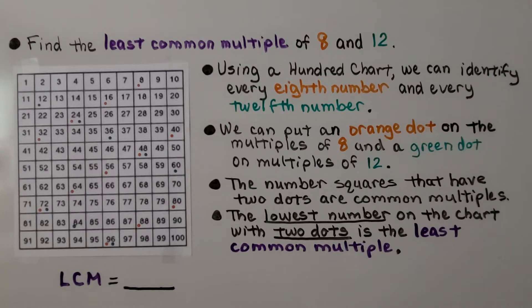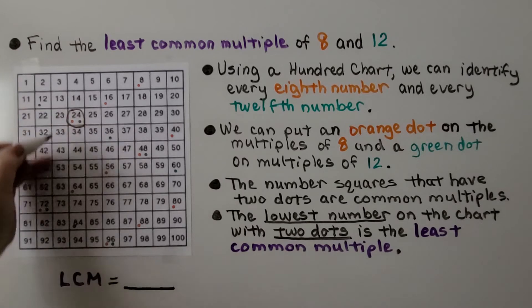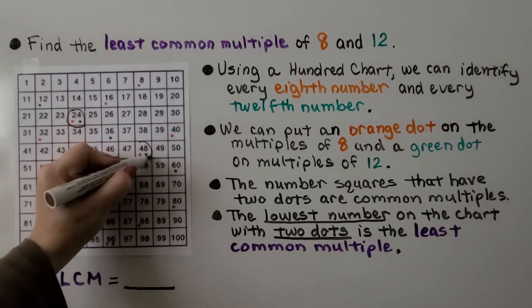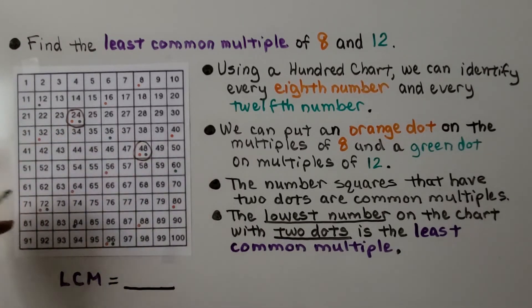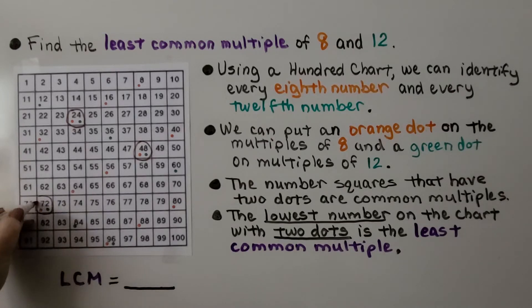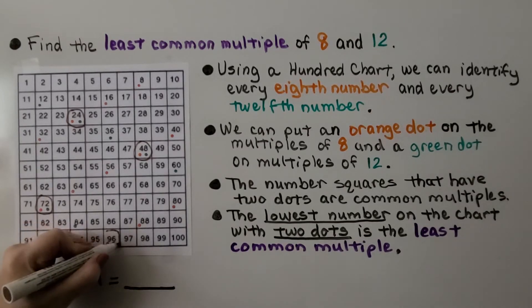Now what we can do is identify the number squares that have two dots that are common multiples. We have 24. We have 48. We have 72. We have 96. These have two dots.